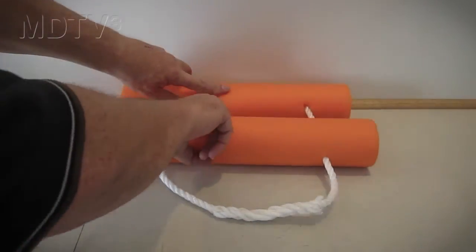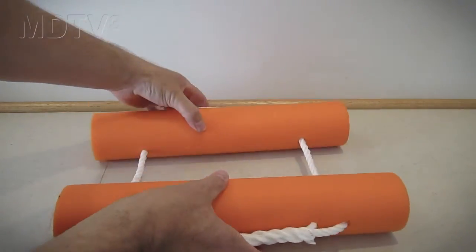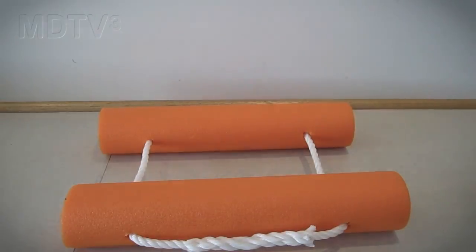Pull each section of the pool noodle out to the extremities of the rope and you have finished making your first tank rack. You can now make the second tank rack with your remaining material.